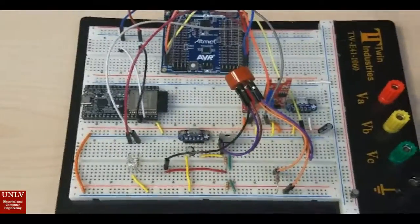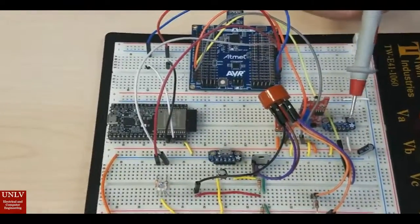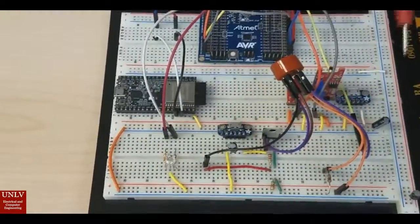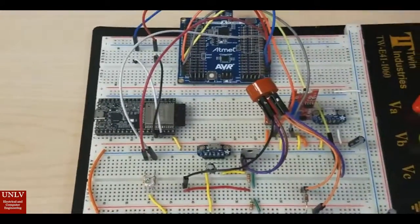To power these sensors, we use these USB modules and just put some decoupling capacitors to flatten out the lines there, ground it. And that got all the sensors powered.